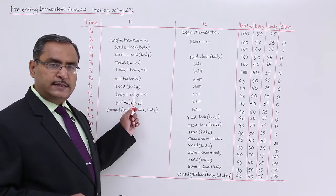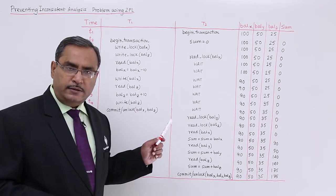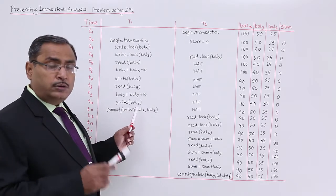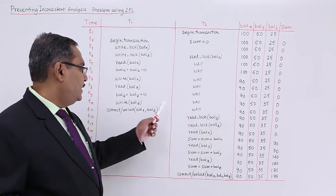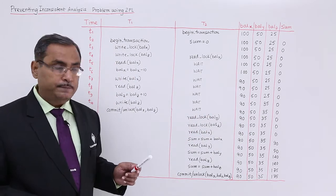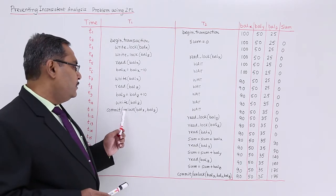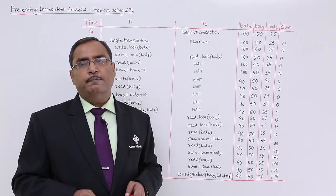Now we are having this read balance Z. It has been read. Balance Z is equal to balance Z plus 10. The balance Z value has got increased by 10. Write balance Z. Now the database will get reflected. This 25 has become 35 at this particular stage, at this particular instant of time that is T10. Commit means it is making the change permanent and along with that it is doing the unlock on this balance X and balance Z.